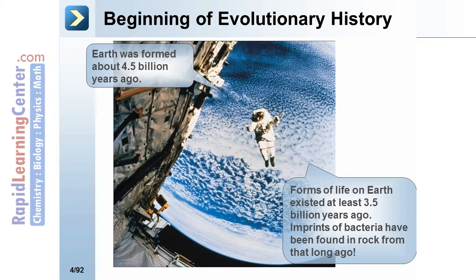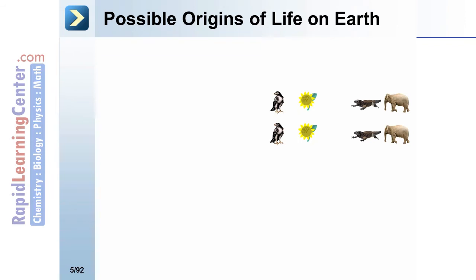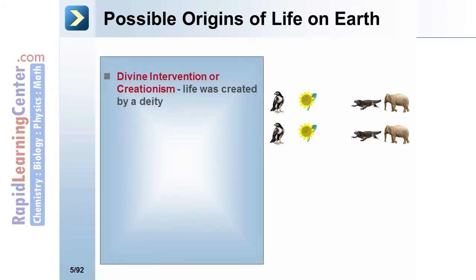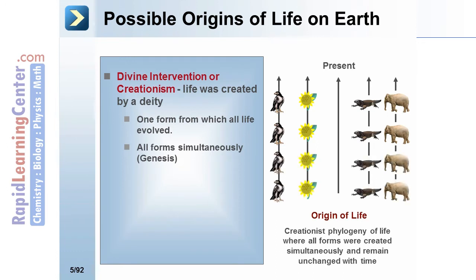The basic structure of Earth includes: continents floating on crusts or tectonic plates; the mantle, which is a semi-solid layer between the crust and core; and the core, which is made up of heavy metals. Possible origins of life include divine intervention or creationism, which states that life was created by a deity. In the creationist phylogeny, all forms were created simultaneously and remain unchanged with time.